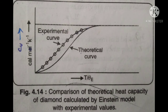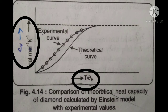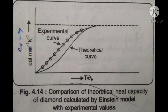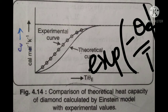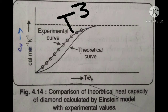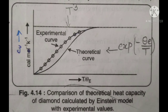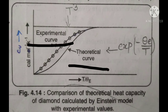At low temperature, T << θE, so θE/T >> 1, making the exponential term very large. As T approaches 0, the exponential exp(θE/T) approaches infinity, causing Cv to approach 0 — matching the experimental observation. However, the theoretical curve varies as exp(−θE/T), while the experimental curve varies as T³. There is a discrepancy between the theoretical and experimental curves, which is the limitation of Einstein's theory.